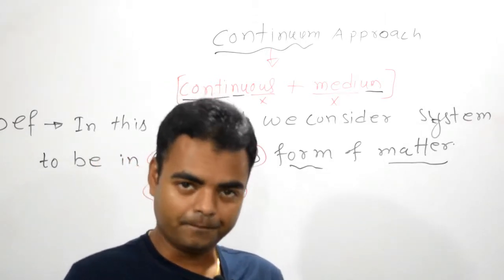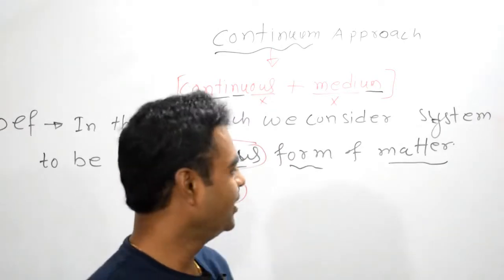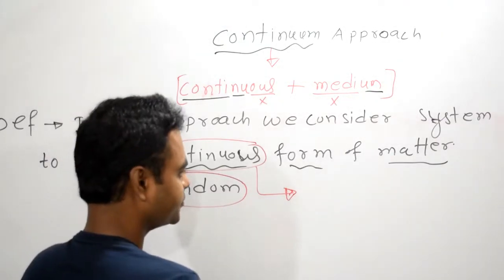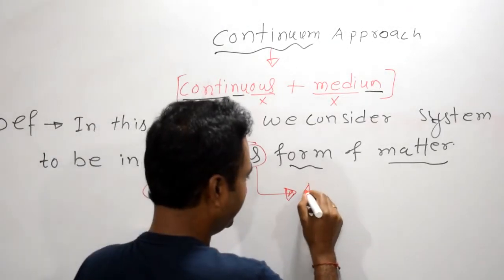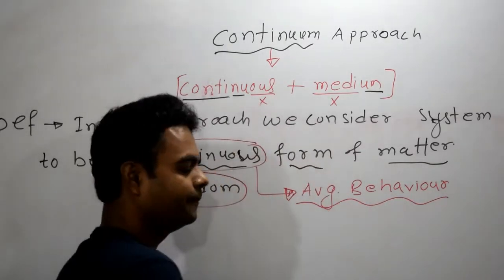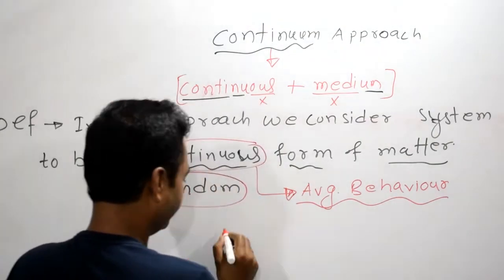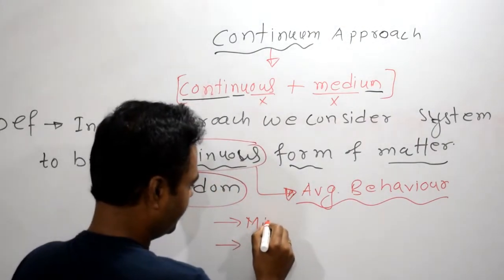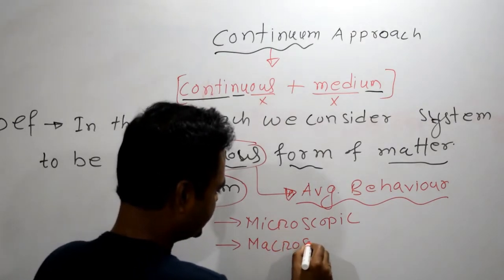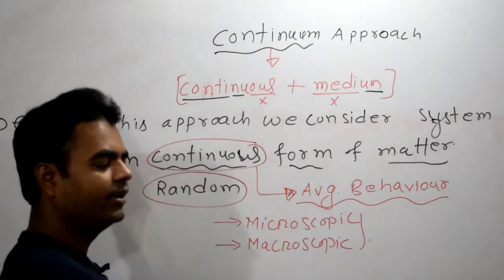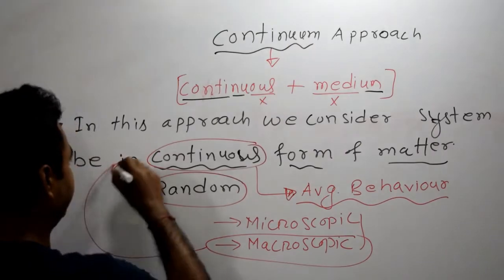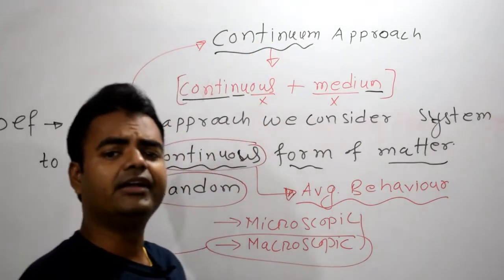When we are talking about matter in thermodynamics, continuous means we are considering average behavior. This average behavior we get from two approaches: one is the microscopic approach and another one is the macroscopic approach. In a separate class I will talk about both, but let me relate this first — macroscopic approach comes under continuum approach.